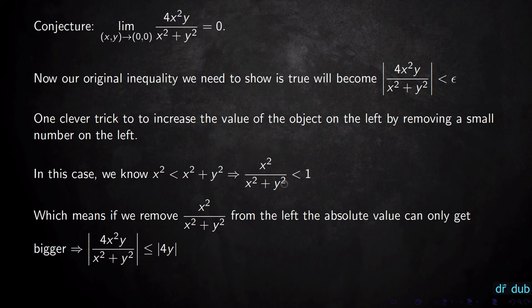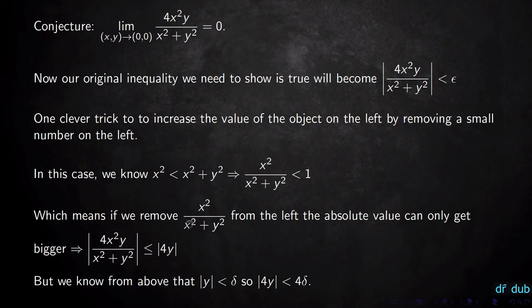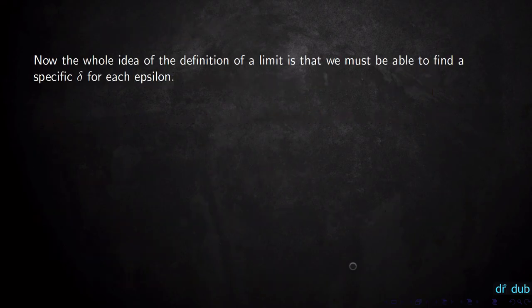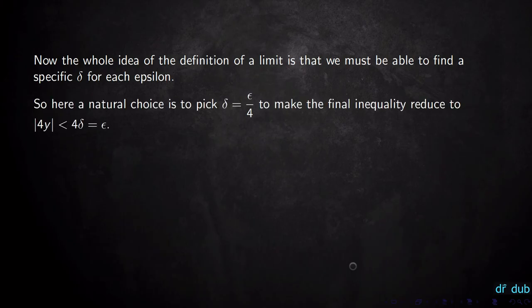Since y² is at least zero for real numbers, x² is definitely less than or equal to x² + y². From above, we know the absolute value of y is less than delta, so |4y| is less than 4·delta. This indicates what we should choose for delta: if we want the expression to be less than epsilon, we should pick delta = epsilon/4. That makes the final inequality reduce to |4y| < 4·delta = epsilon.